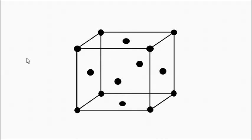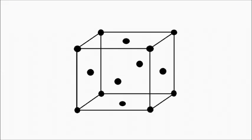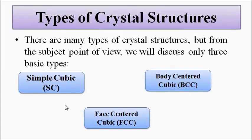It is called face centered cubic because at the center of each of the six faces we have lattice points, while the rest is the same as a simple cubic crystal. Similarly, the body centered cubic is called so because at the center of the cubic body we have an extra lattice point. These are the three types of crystal structures — simple cubic, body centered cubic, and face centered cubic.